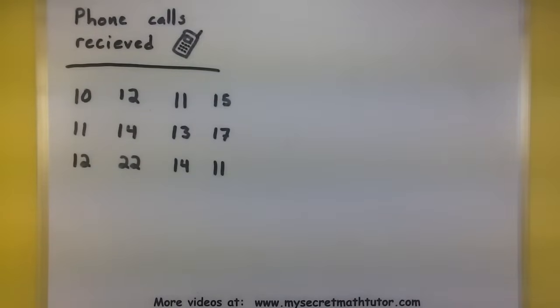In my data, I have a chart of maybe how many phone calls were received on any given day. So I got 10 phone calls on the first day, 12 phone calls on the second day, and so on and so forth. If I'm going to compute things like Q1, Q3, and the interquartile range, it's probably a good idea to take all of this data and write it out in order.